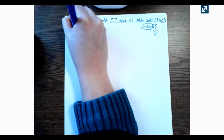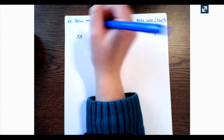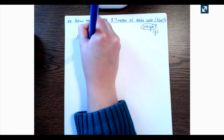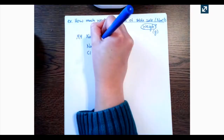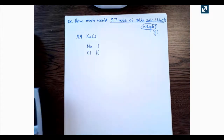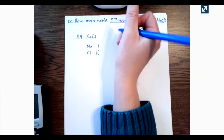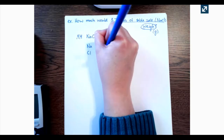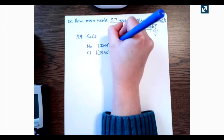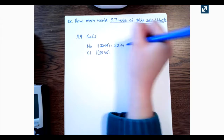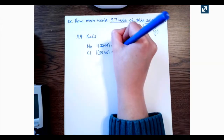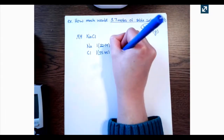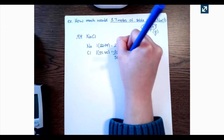So we need to find the molar mass of sodium chloride. I list the elements: sodium and chlorine, one of each. I look on the periodic table to find their masses — sodium is 22.99 and chlorine is 35.45. Multiply across and add those together, and that gives me a molar mass of 58.44 grams per mole.